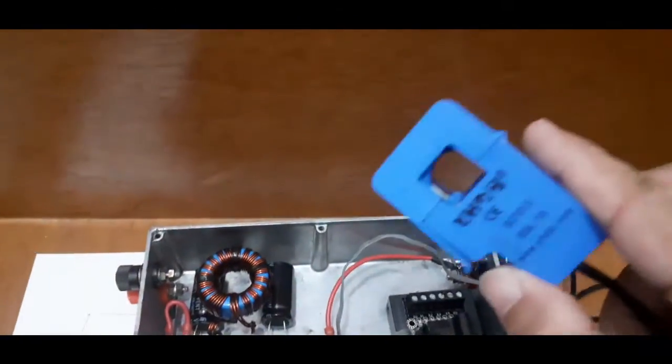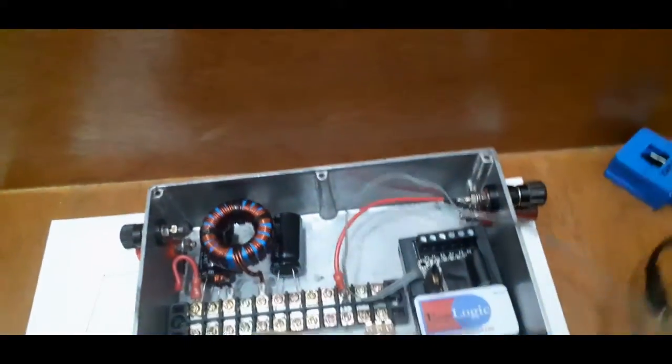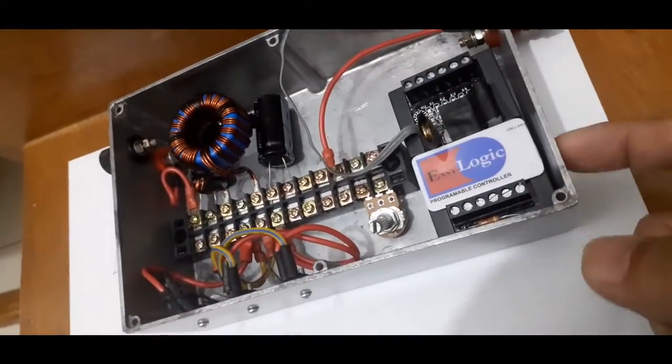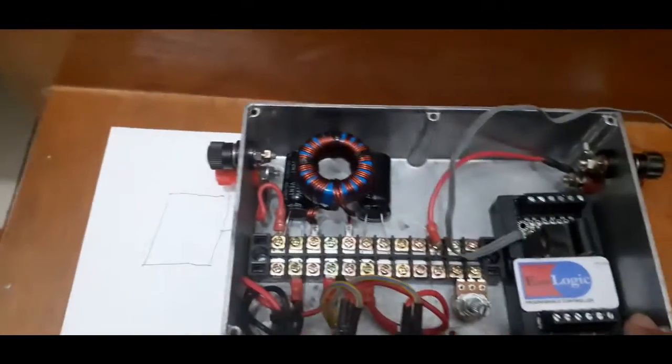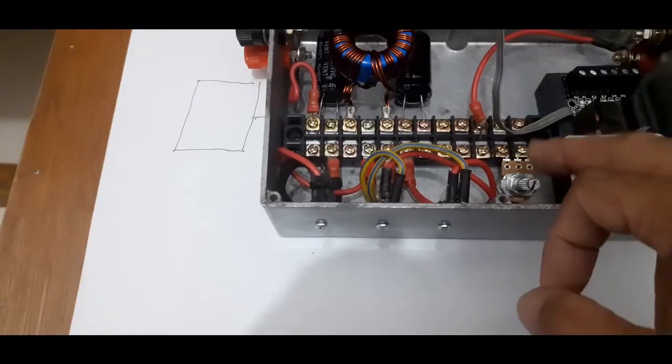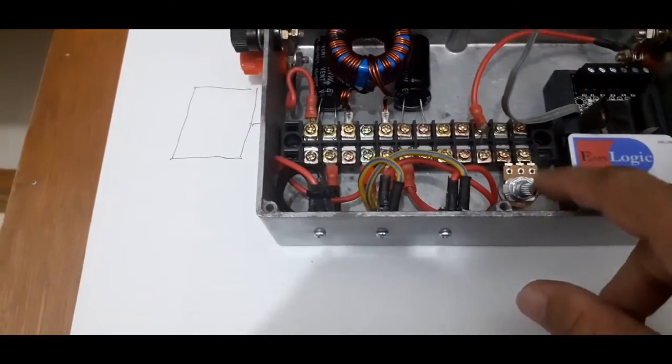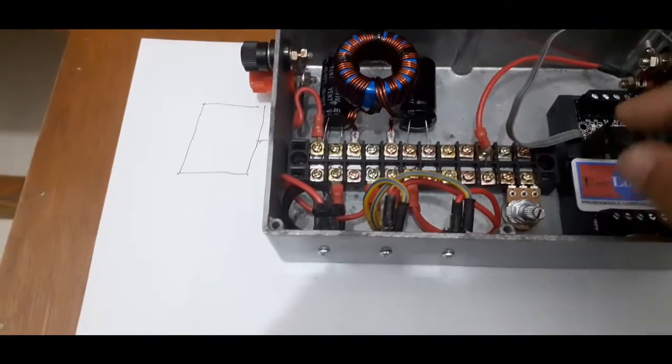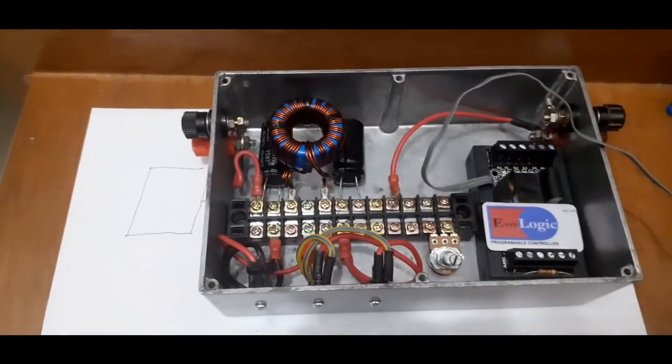And this will be the current sensor. I also need to connect it. I need to put some connection here, and that will go to this potentiometer. I want to put this so I'll have the option to adjust sensitivity and also the calibration of the current sensing.